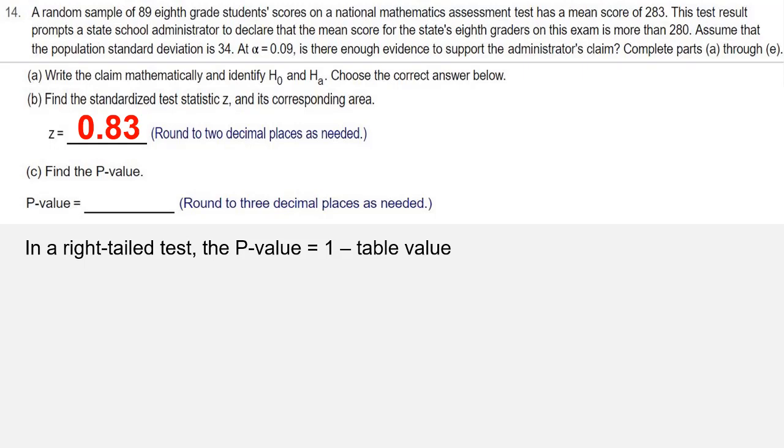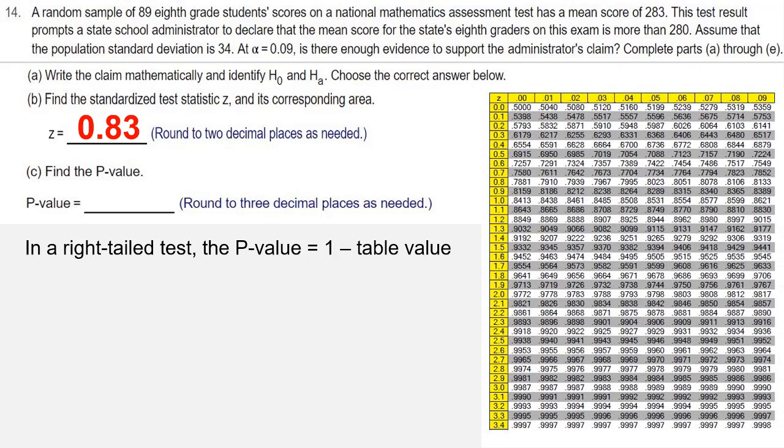We're going to need the positive side of the standard normal distribution table, because our z-score was positive 0.83. When we look up z equals 0.83, we get a table value of 0.7967.